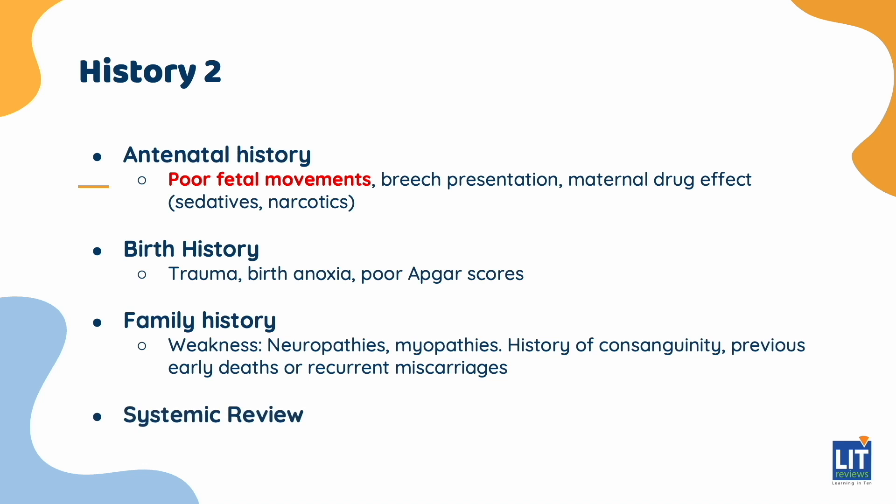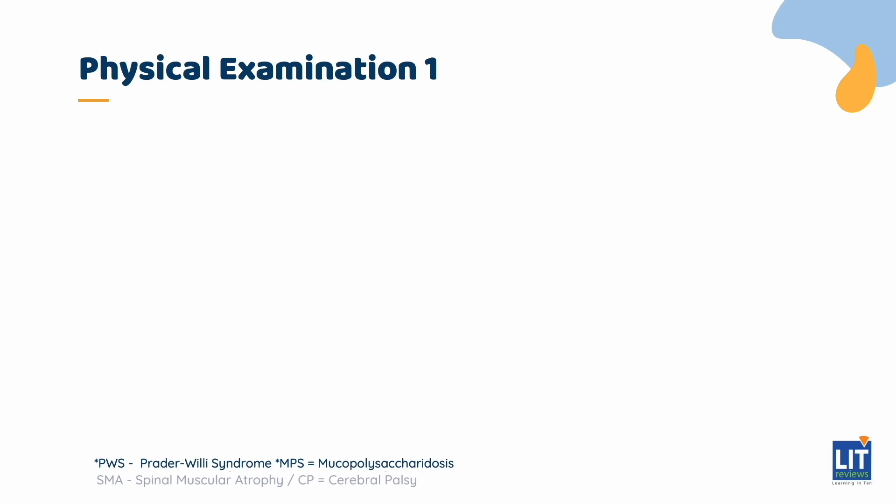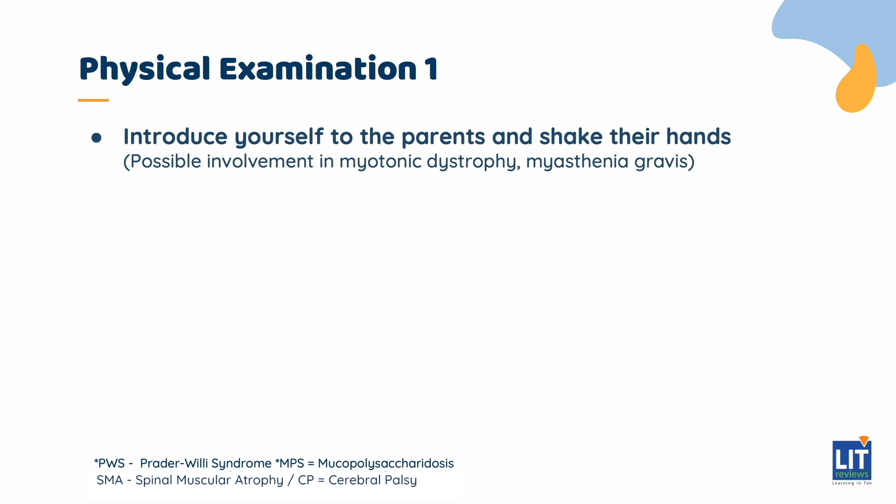On systemic review, ask about feeding difficulties, difficulty breathing, and the presence of any fever or seizures. Introduce yourself and shake the hand of the parents. Observe for any obvious abnormalities. You may just be able to pick up signs of myotonic dystrophy or myasthenia gravis in the parents.